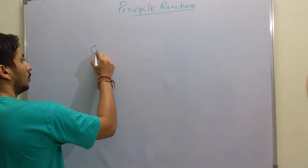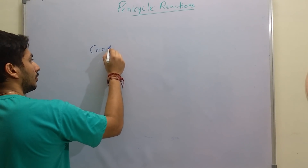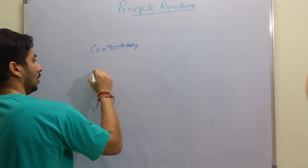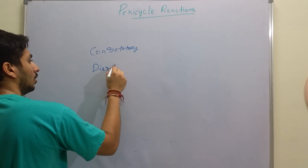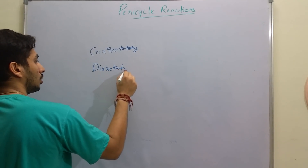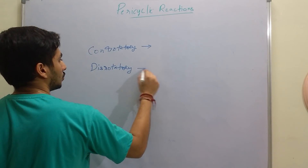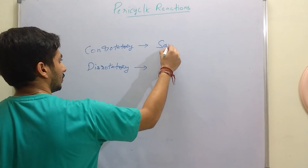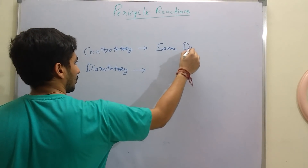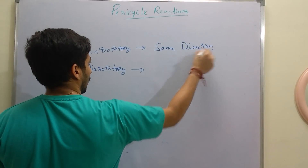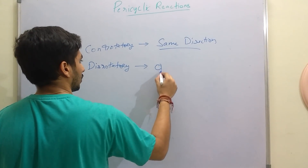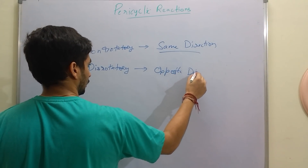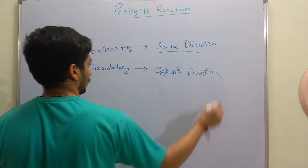Note down two very important terms: conrotatory and disrotatory. Conrotatory means rotation in the same direction. Disrotatory means rotation in the opposite direction. We will be using these terms a lot.